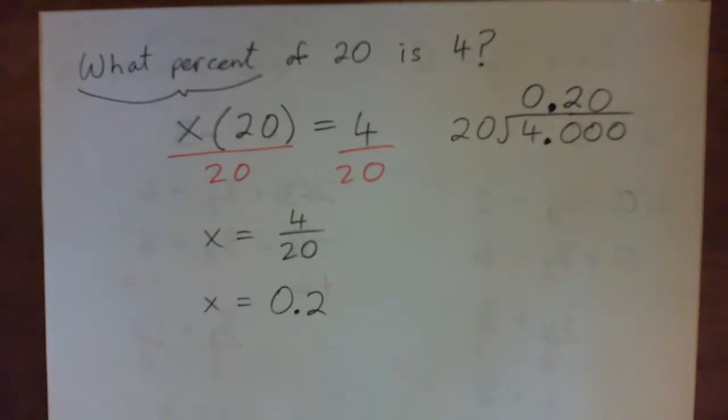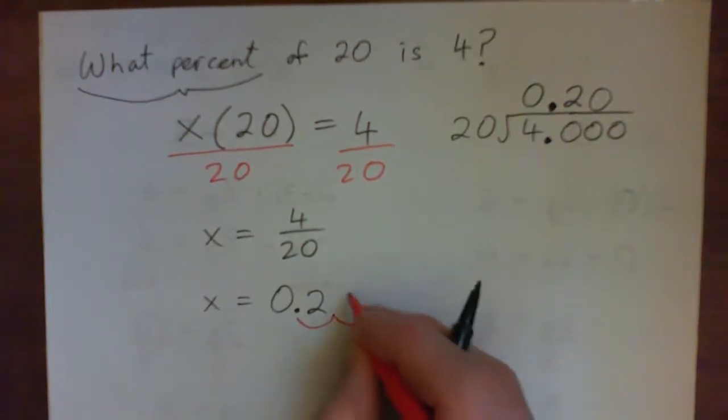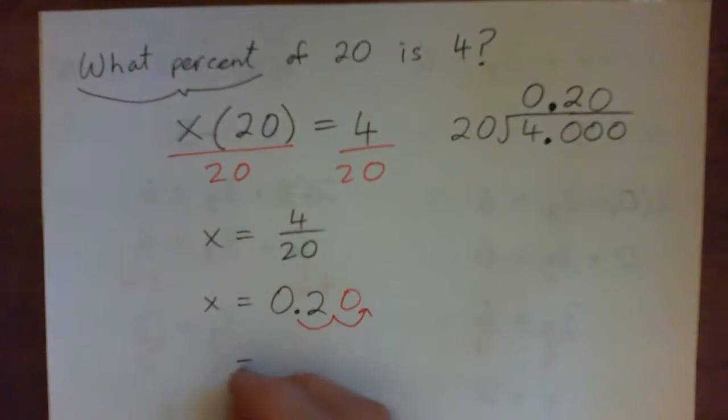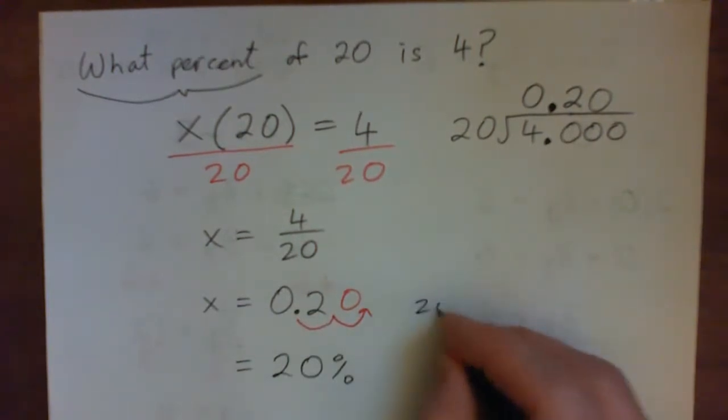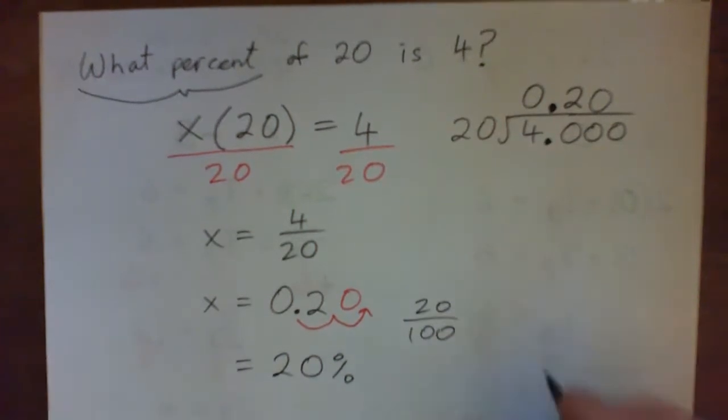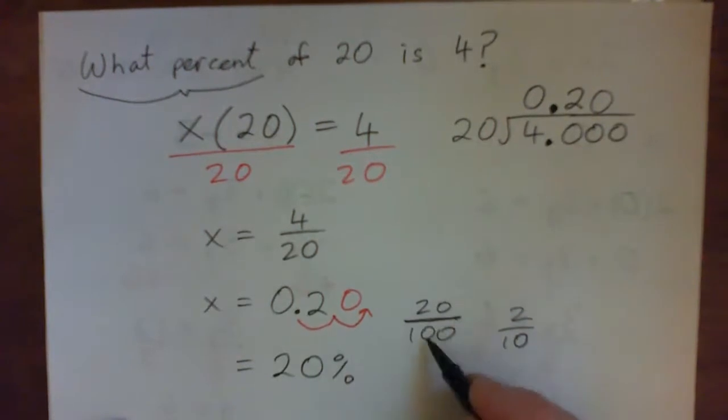But we've got to get the percentage. So we need to turn 0.2 into a percent. You might have memorized the trick of taking the decimal point and just move it two spots to the right and put a zero in here because that is 20%. And that's correct. Another way of doing it is 0.2 is 0.20 or 20 per 100. 2 over 10 or 20 over 100. These are the same thing. And 20 over 100 is 20 percent. It's 20 per 100.